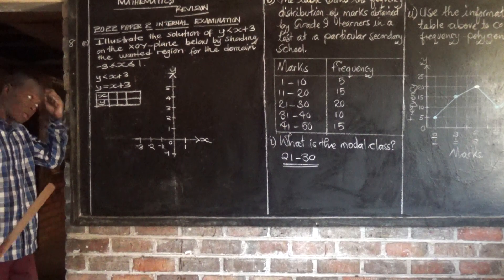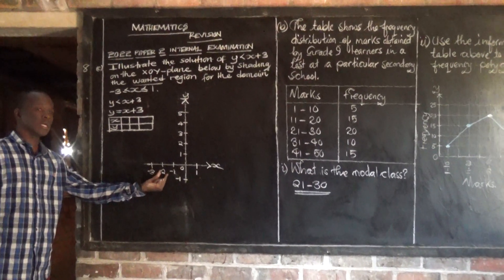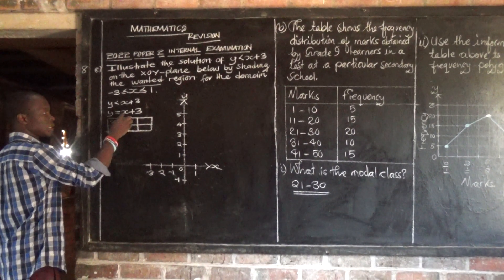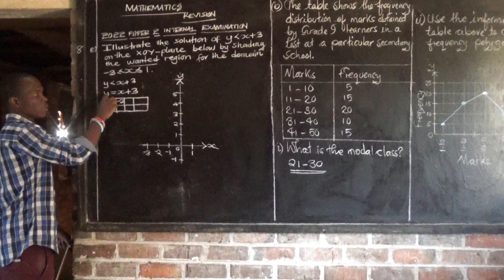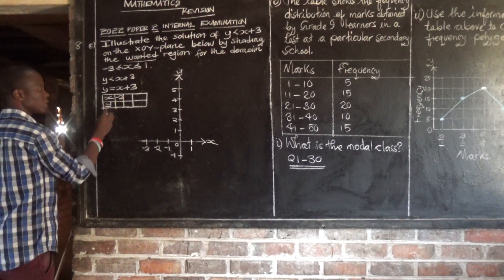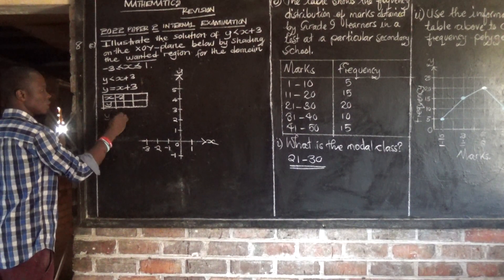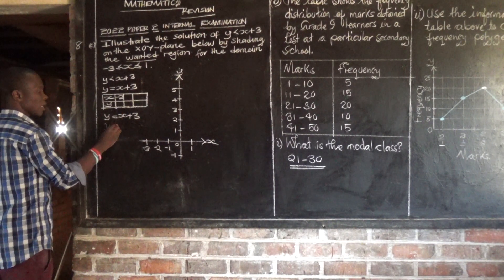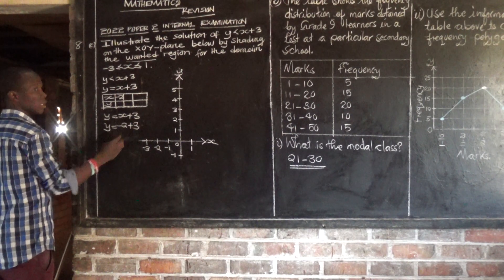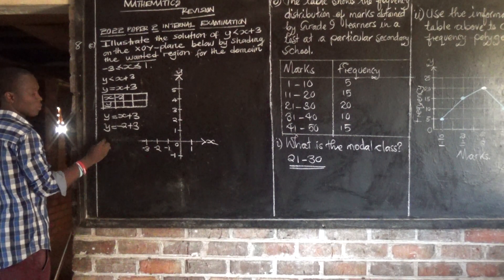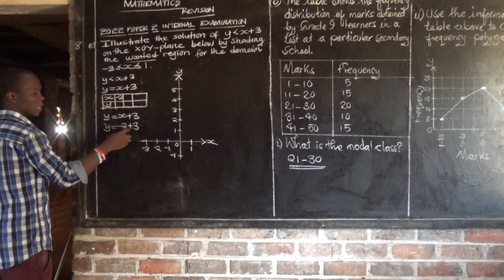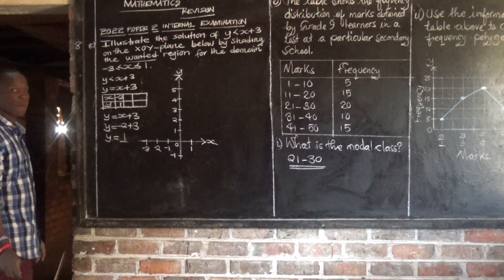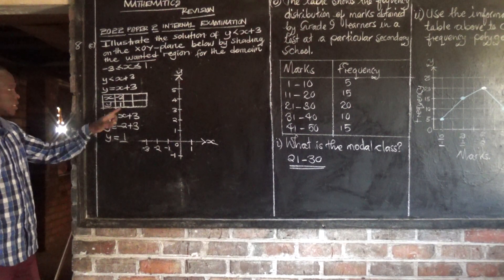What if x is negative 2? What would y be? You put negative 2 into the equation y equals x plus 3, and substitute. So y is equal to negative 2 plus 3. You get 1. So this coordinate is negative 2, 1.